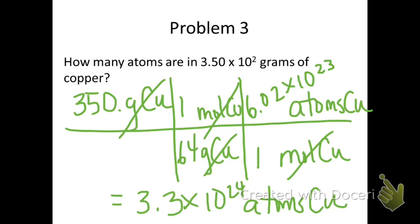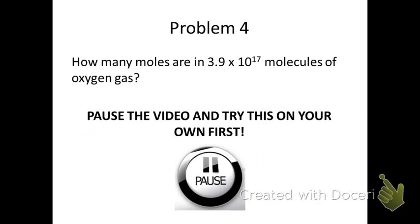The rest of the problems on this worksheet are worked out for you on this video. However, I want you to try the next one on your own. Read question 4 and pause the video. You are asked to find how many moles of oxygen gas are in 3.9 times 10 to the 17th molecules of oxygen gas. Pause the video, attempt this problem on your own, and then check your work.